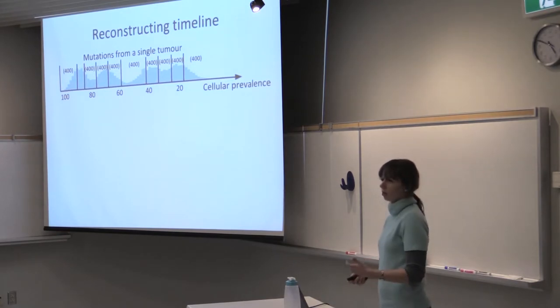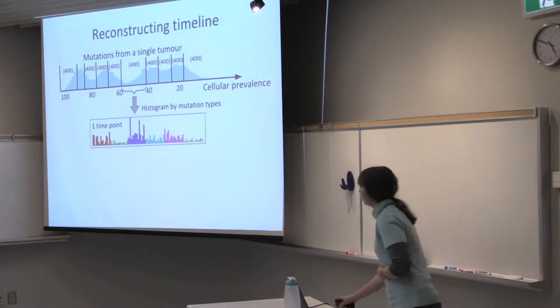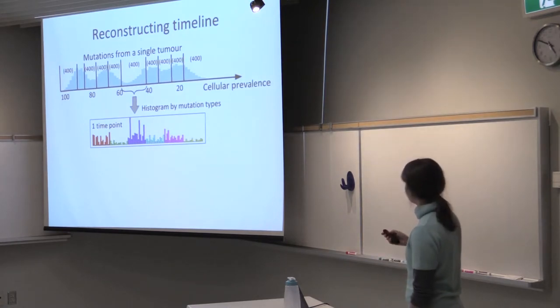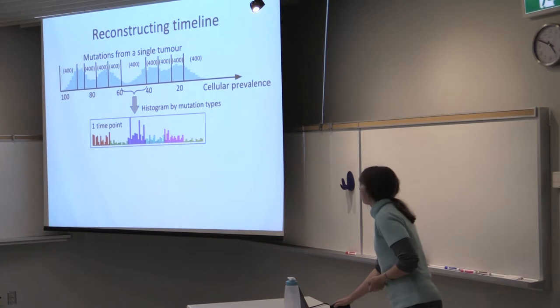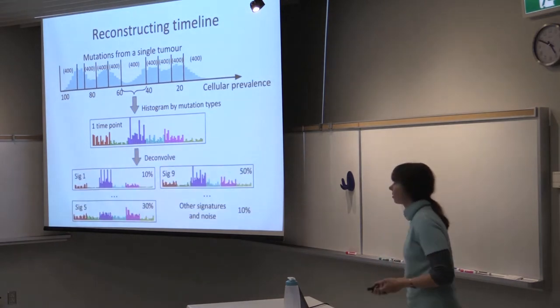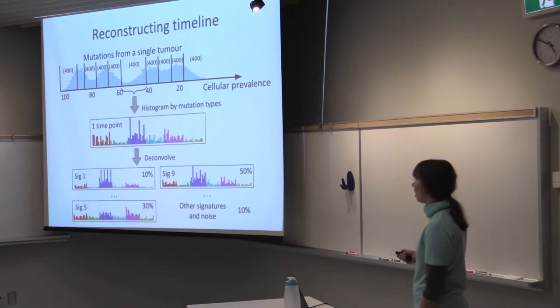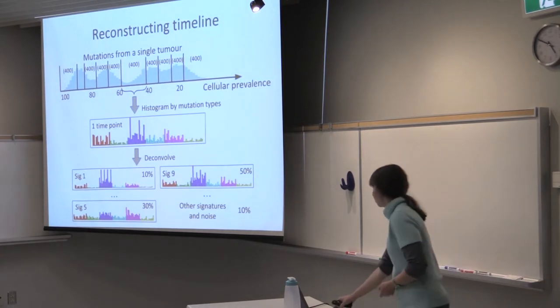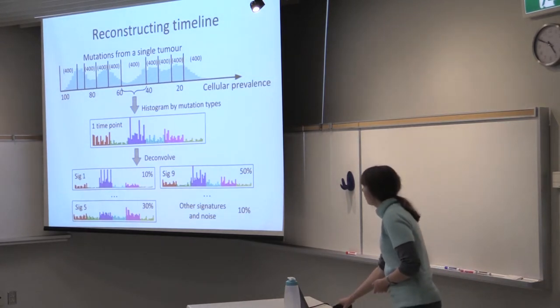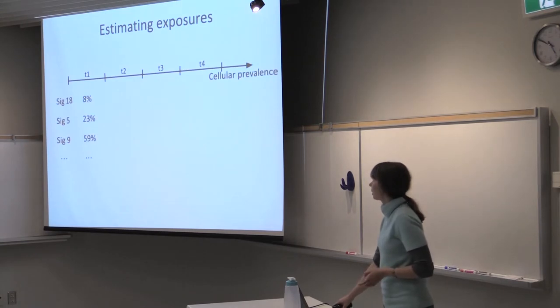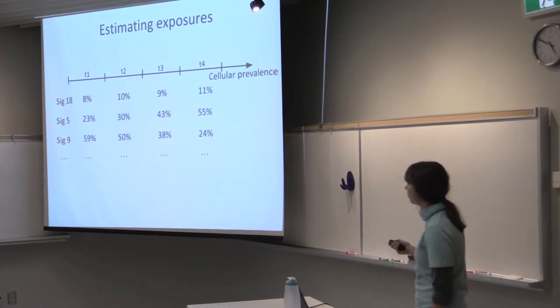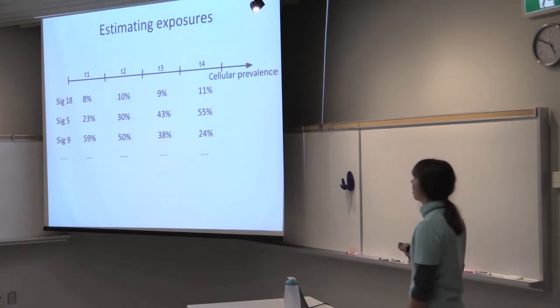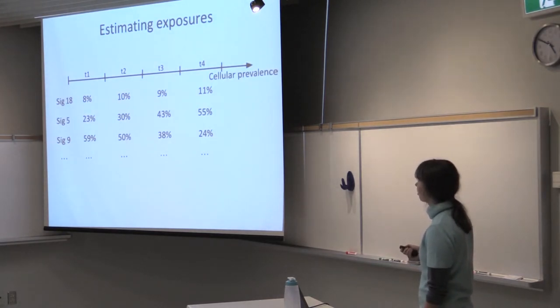Then within one time point, we can separate the mutations into 96 types and view it as a histogram as before. And then we can apply some methods such as mixture of multinomials to extract how many of those mutations were actually produced by a certain signature. Therefore, for each time point, we get these mixture coefficients for each signature, which basically show how signature exposure was changing over time.